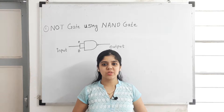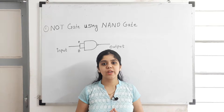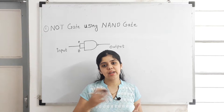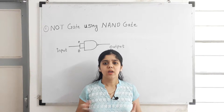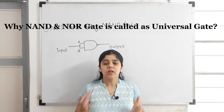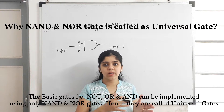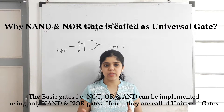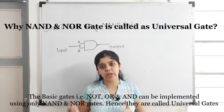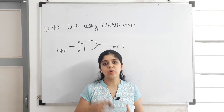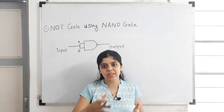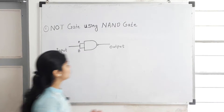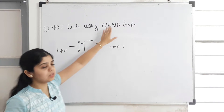Hello, welcome to iFocus tutorials. Today in this video I am going to explain the universal gates. As we all know, NAND gate and NOR gate are called universal gates. The reason is the basic gates — NOT gate, OR gate and AND gate — can be implemented using only these universal gates, that is NAND gate and NOR gate. In this video I am going to show the implementation of all these basic gates using the NAND gate and the NOR gate. I am starting with the NOT gate implementation using the NAND gate.